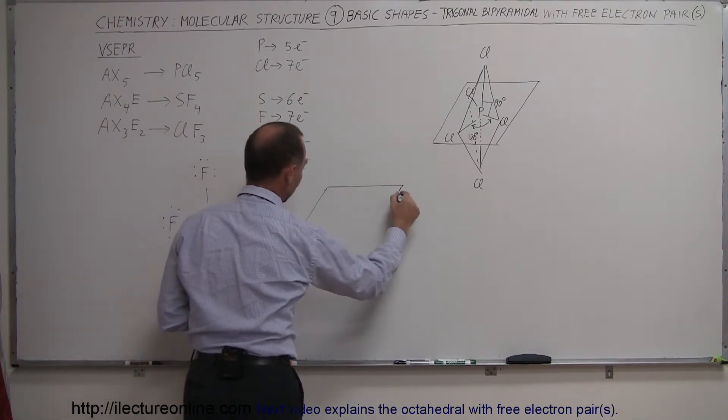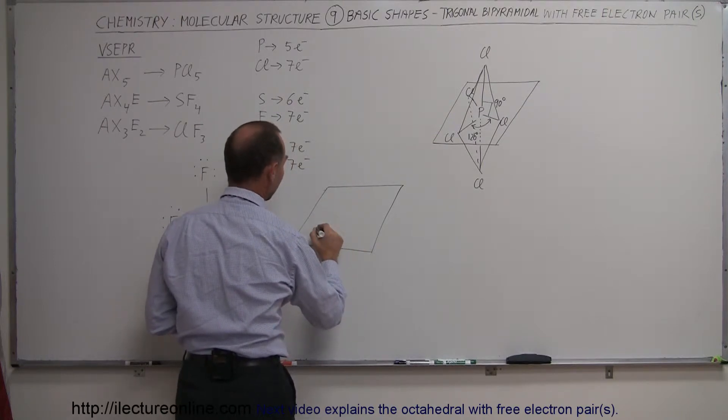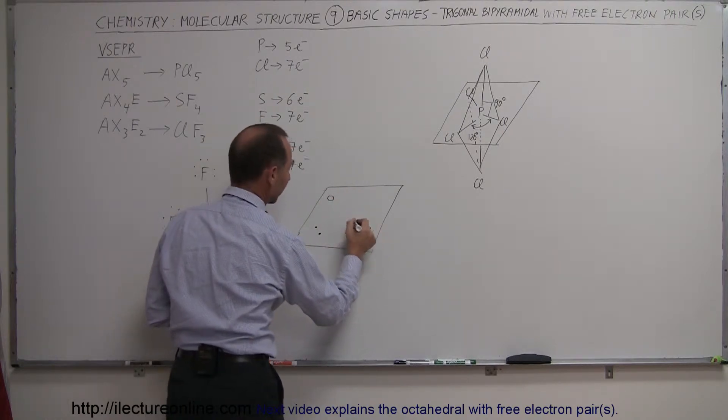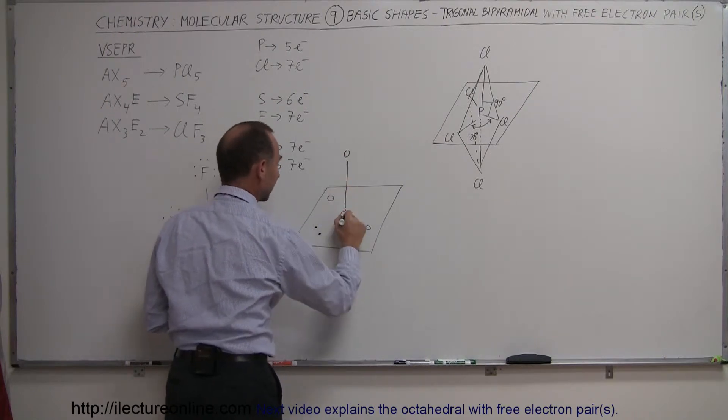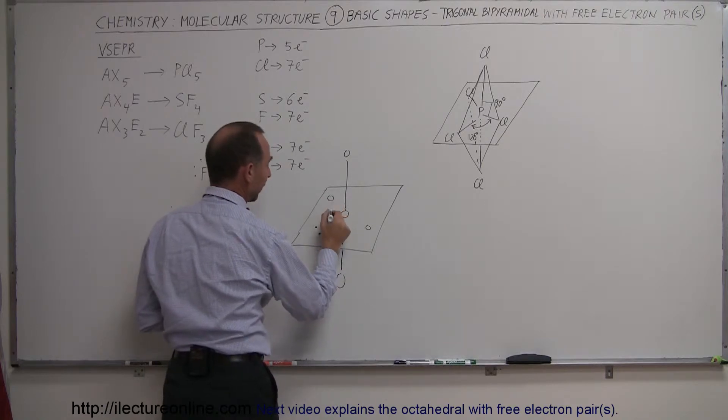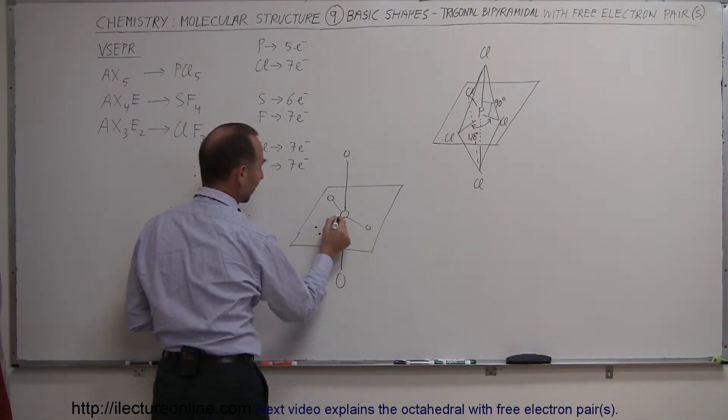So what happens then, let's draw this out here. So we have the plane, we have one free electron pair in the plane, draw it right here, we have down one chlor, well in this case all fluorine, one fluorine there, one fluorine there, we have the central atom up here, then of course we have the atom up here, and then we have the atom down there.